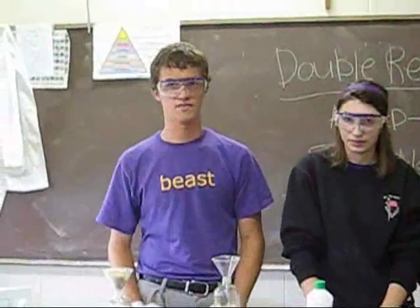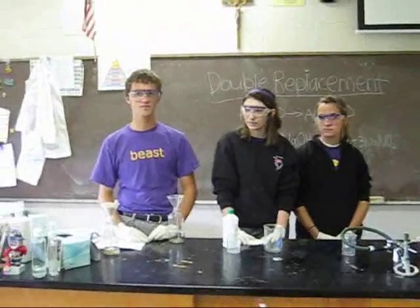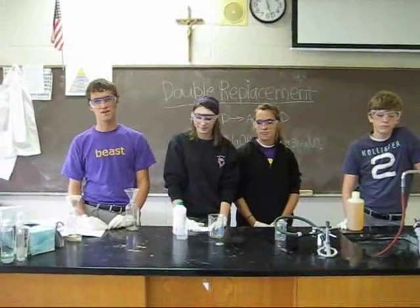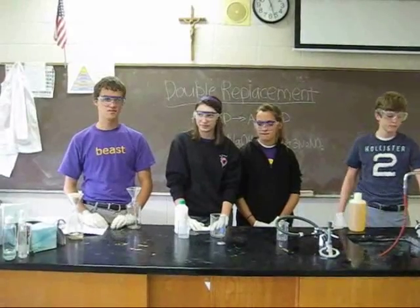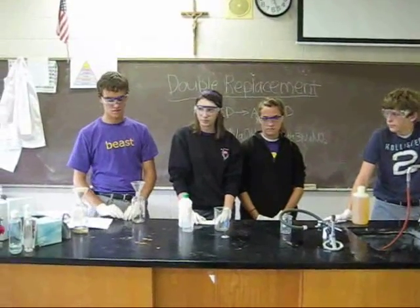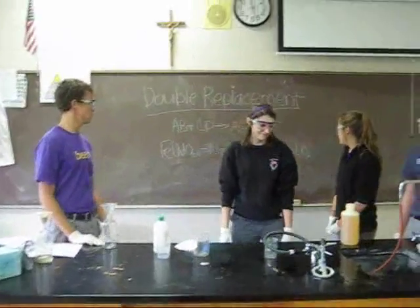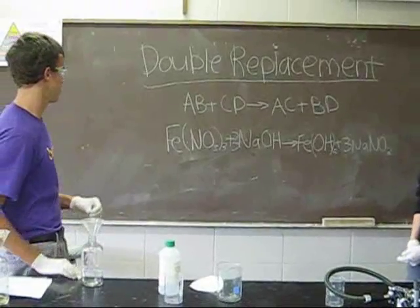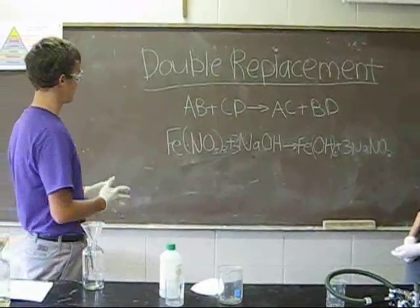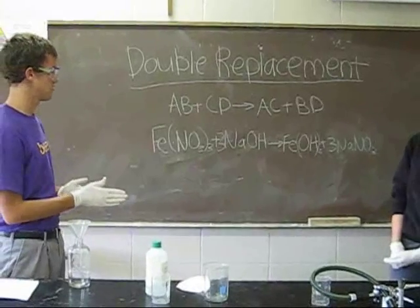In a double replacement reaction, there are usually two aqueous solutions that you mix together to form an aqueous solution and a solid. The general chemical equation for a double replacement is AB plus CB equals AC plus BD. Our formula is iron 3 nitrate plus sodium hydroxide.